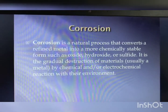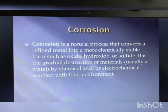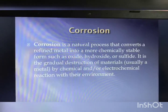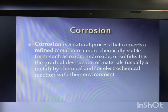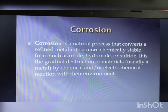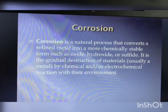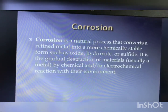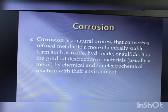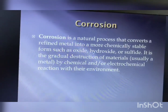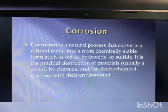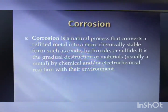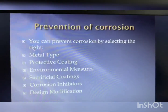The next topic is corrosion. Corrosion is a natural process that converts a refined metal into a more chemically stable form such as an oxide, hydroxide, or sulfide. It is the gradual destruction of materials — usually a metal — by chemical or electrochemical reaction with their environment.